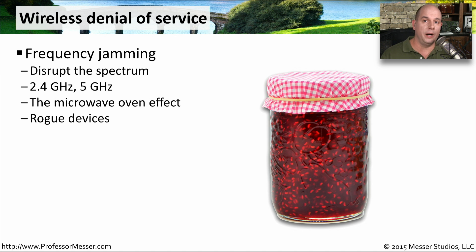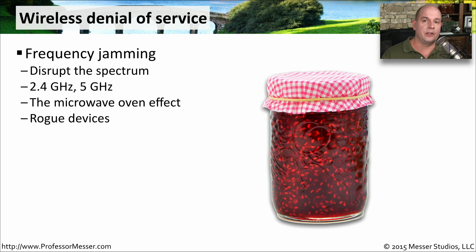A somewhat obvious denial of service for a wireless network would be to disrupt the entire wireless spectrum all at one time. If you can put your signal on the 2.4 gigahertz and the 5 gigahertz bands, your access points will not be able to use those frequencies. You can think of this as the microwave oven effect — when you turn on a microwave oven that's not well shielded, it sends out so much energy that it affects all of your wireless frequencies. There are also rogue devices you can put onto a network to disrupt all of the frequencies in those wireless ranges.